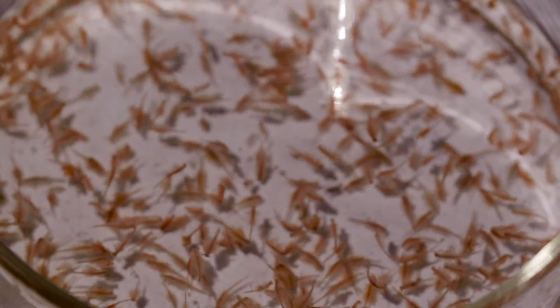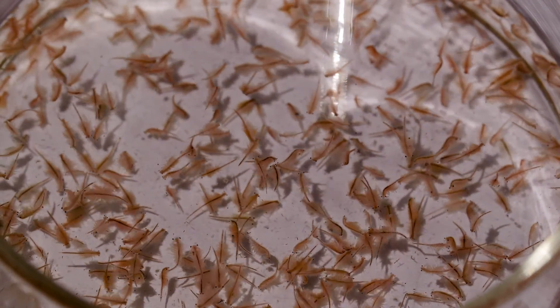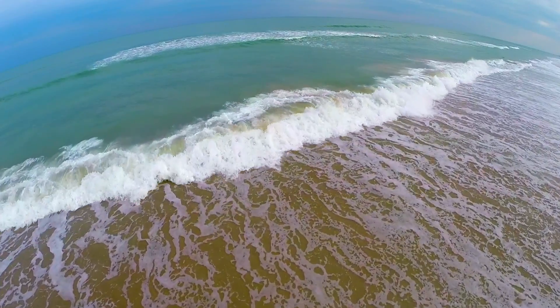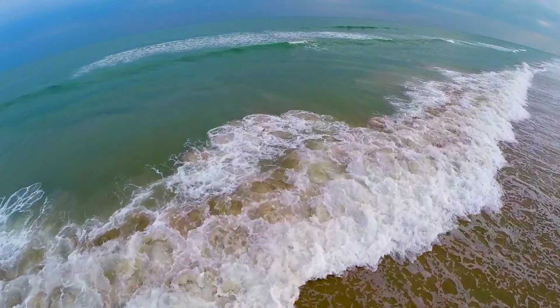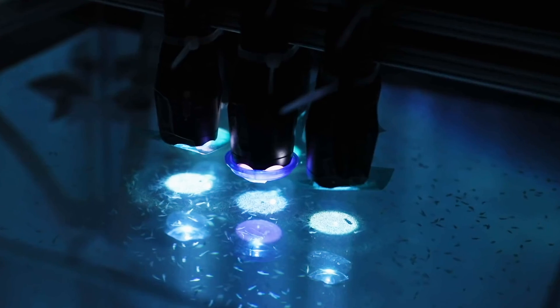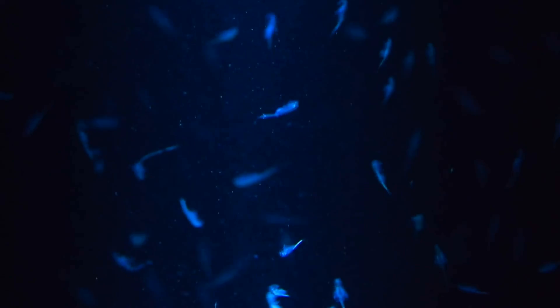What we're trying to do is understand those processes that drive ocean circulation, for example, because that's going to allow us to predict what happens with future climate. If these organisms are playing a significant role in the ocean, then that's an important feature that we need to add to our calculations of what will happen to global climate in the coming years.